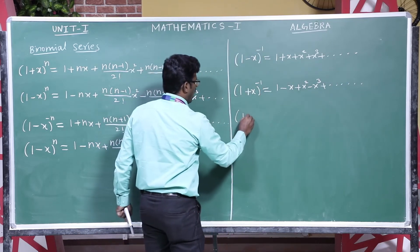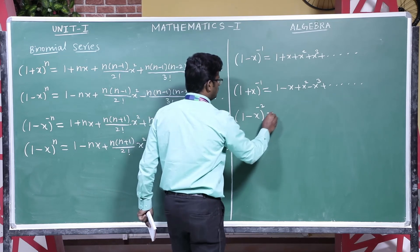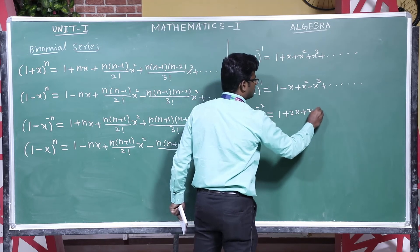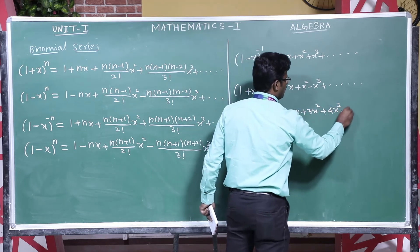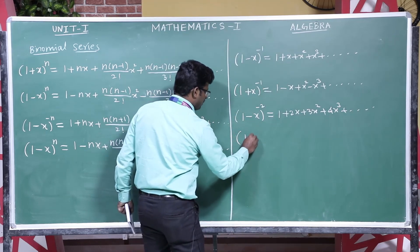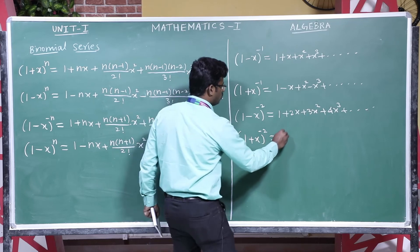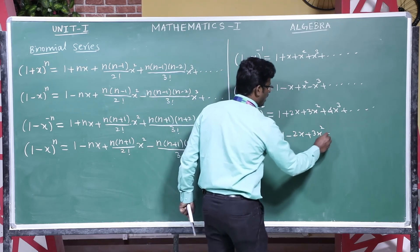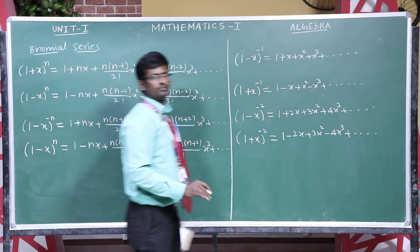Then (1 − x) whole to the power minus 2 equals 1 plus 2x plus 3x squared plus 4x cubed, and so on. Then (1 + x) whole to the power minus 2 equals 1 minus 2x plus 3x squared minus 4x cubed, and so on.